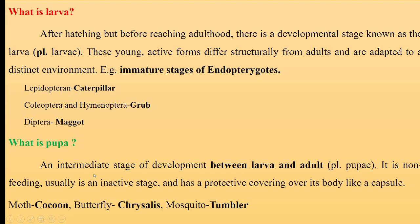Then coming to the pupa — pupae is the next, third stage after the larvae. It is the intermediate stage between the larvae and adult; plurally it is known as pupae. It is non-active, non-feeding, inactive stage. But it is active inwardly and inactive outwardly. It has a protective covering over its body that looks like a capsule. All the developments that are required for adults are being held inside this pupae only.